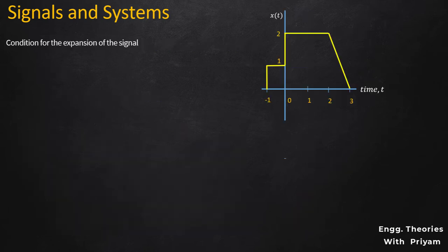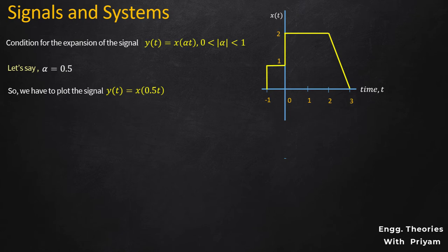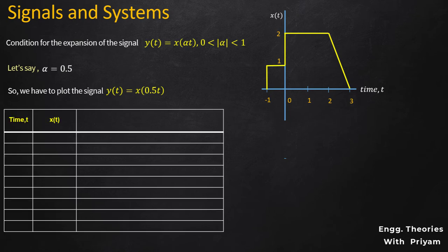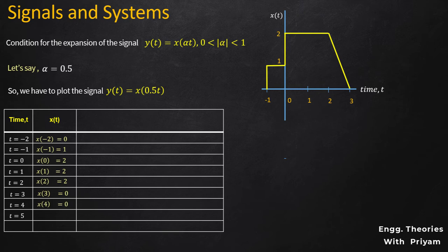For time expansion: Y(T) = X(alpha*T) where alpha lies between 0 and 1. Let alpha = 0.5, so we plot Y(T) = X(0.5T). We make a table for different values of X(T): when T = -2, X(-2) = 0; when T = -1, X(-1) = 1; from T = 0 to T = 2, X(T) = 2; when T = 3, X(3) = 0; and for all other instants X(T) = 0.